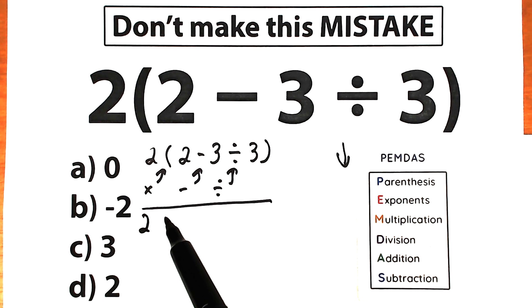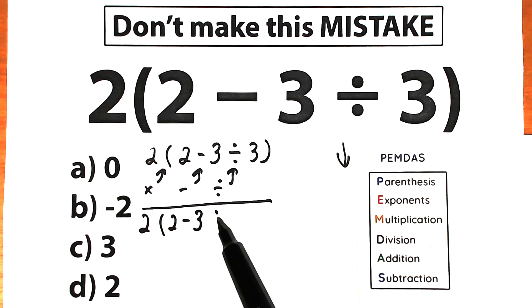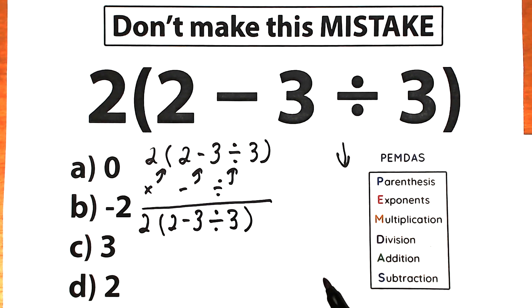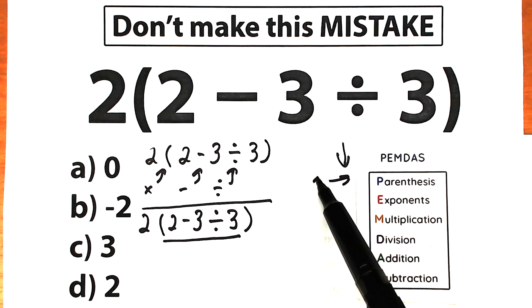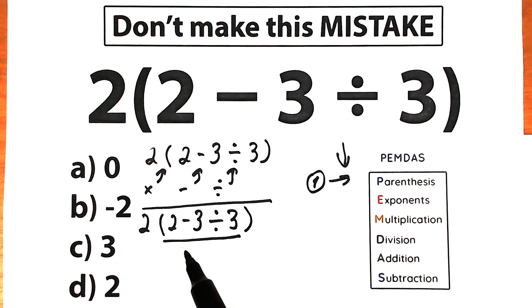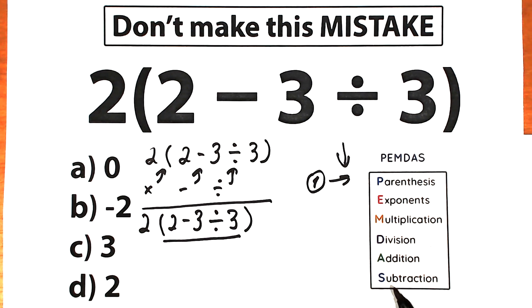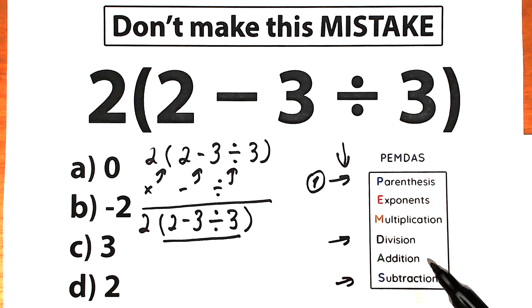Let's solve our challenge according to PEMDAS order of operation. We have 2 times 2 minus 3 divided by 3. We have parentheses, so first we should evaluate the expression inside parentheses. Inside parentheses we have two signs: division sign and subtraction sign. Division has a higher position than subtraction, so division has the higher priority.